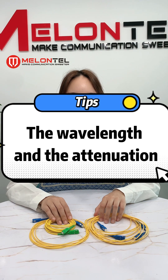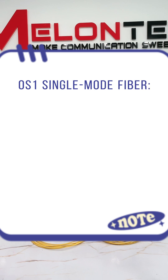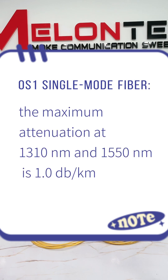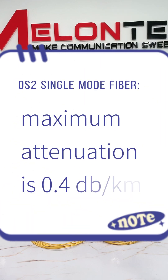Second, the wavelength and the attenuation. OS1 single-mode fiber's maximum attenuation at 1310 nm and 1550 nm is 1 dB per km. OS2 single-mode fiber maximum attenuation is 0.4 dB per km.